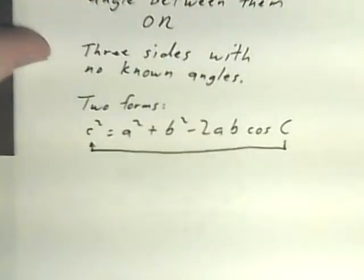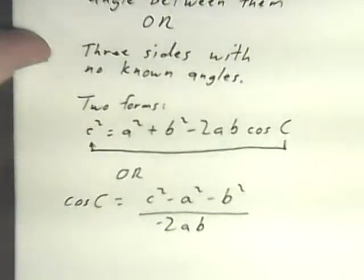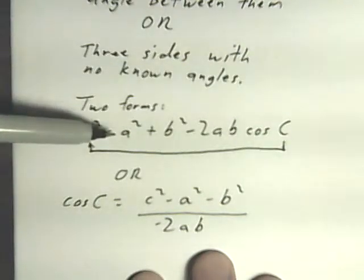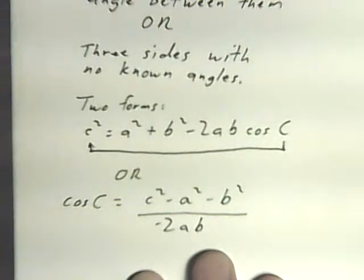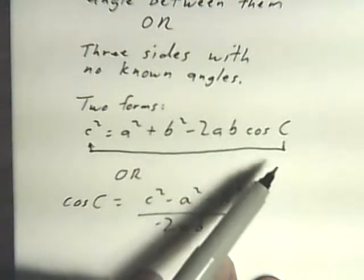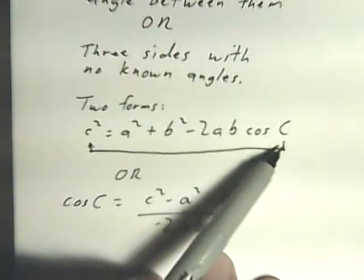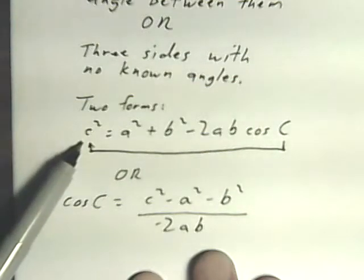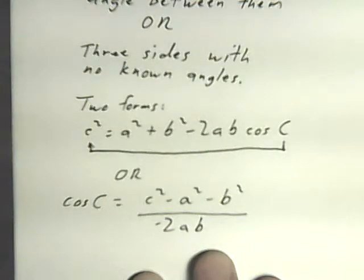There are two forms of the cosine law. The first form is c squared equals a squared plus b squared minus 2ab cos C. It looks a little bit like the Pythagorean theorem. You can always know how to write it out because the letter for the angle is always the same as the letter on the left side of the equals sign.